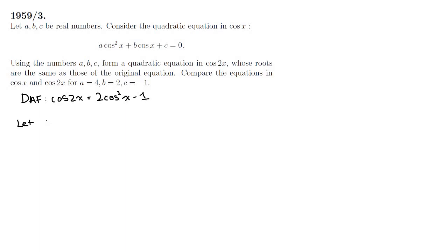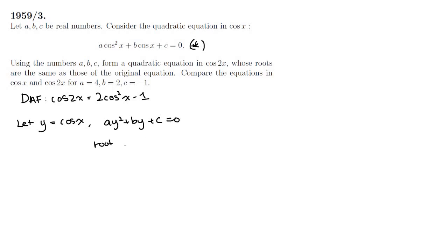Tidying up the original equation a bit, let's let y equal to 2 cos x. This will make it a bit easier to work with, so that our original equation is now Ay squared plus By plus C equals 0. And let's let the roots of this original equation in y be M and N.